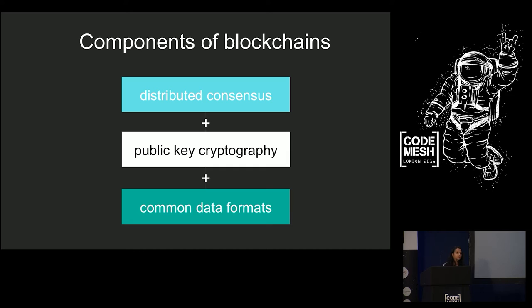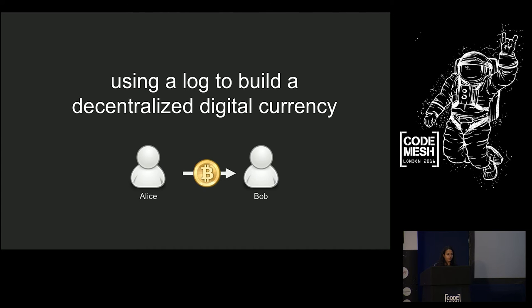So when used across administrative domains, this combination, distributed consensus, public key cryptography, and common data formats, this combination is really powerful. You end up with this totally auditable log, and you can redo validation if you want to, to ensure correctness. And you can ensure that things haven't been tampered with. So that's blockchain technology in a nutshell. This is what people are talking about. It's cool, and it's useful, and it's very interesting, and it can solve some problems in the real world.